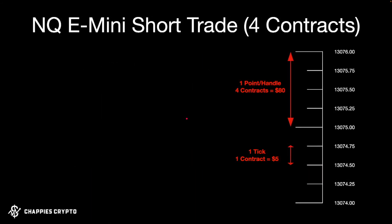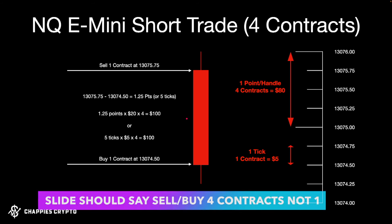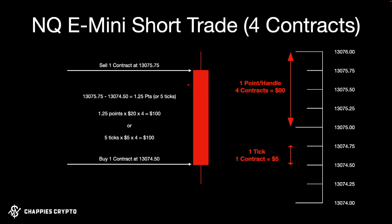Multiple short contracts work exactly the same way — same calculation, just multiplied by the number of contracts. You don't really have to calculate this manually because your trading platform, TradingView, and your broker's tools do these calculations automatically. But when I got started I didn't really understand how this all worked, so I wanted to go into a bit of detail about it. That's how a short works at a really basic level.